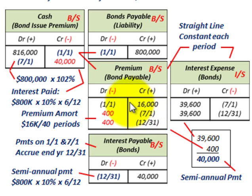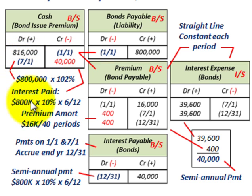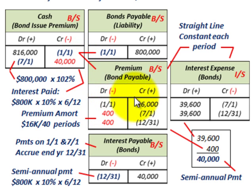Moving to our first payment on July 1st: the interest paid is $800,000 face value times 10% interest rate times 6/12 months, giving us $40,000 — so we reduce cash by $40,000. At this time we also have to amortize the premium down and recognize interest expense on the bond.